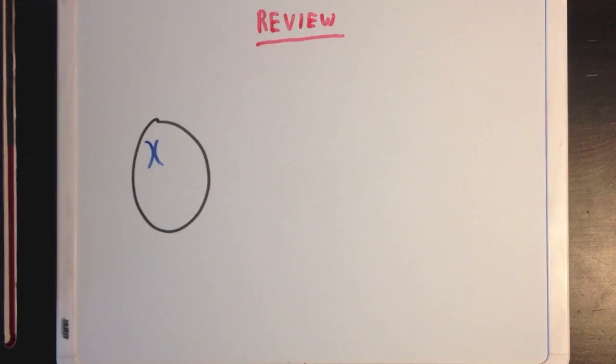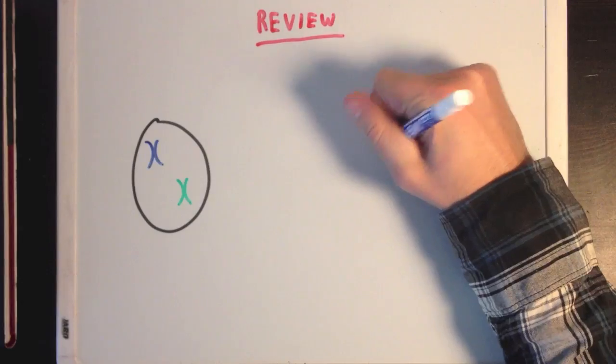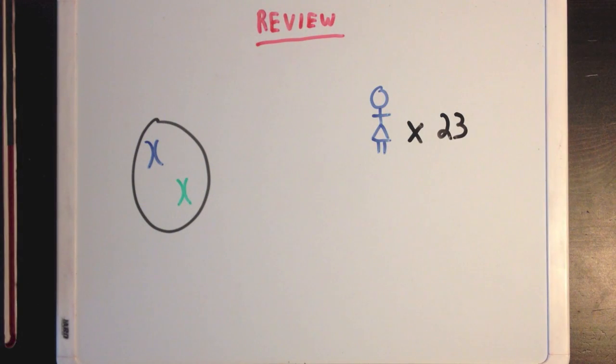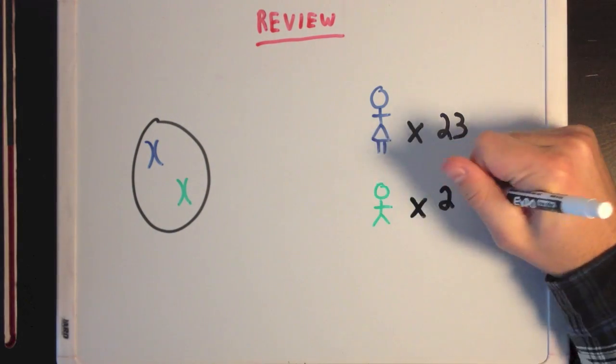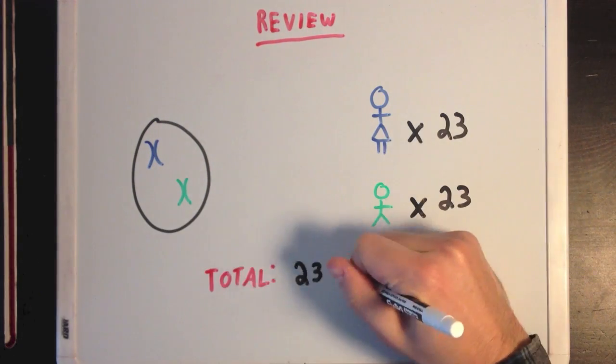Remember that each human cell contains 23 maternal chromosomes and a second paternal copy of the same 23 chromosomes, leading to a total of 23 pairs of chromosomes per cell.